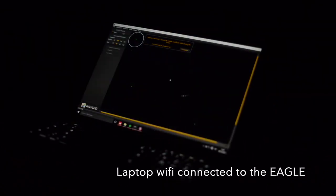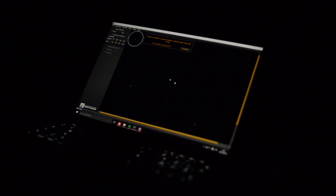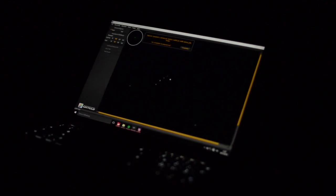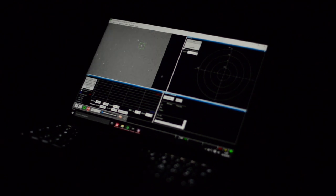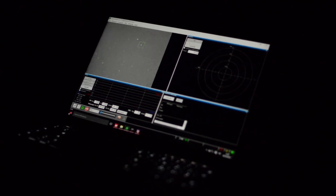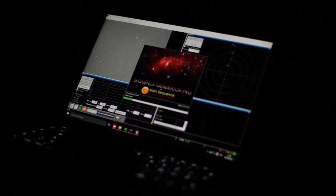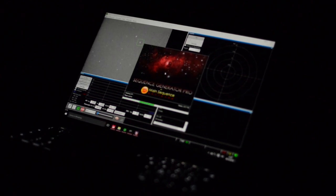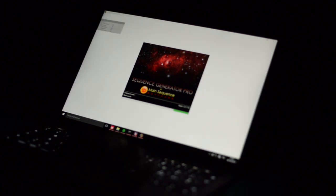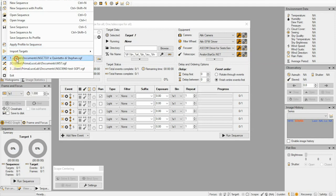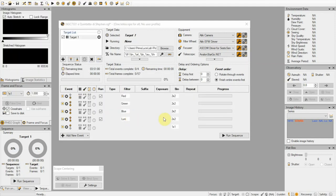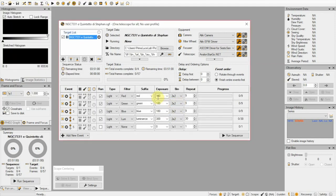So we have the polar alignment done, complete with the PoleMaster. Then we have the autoguiding software already running and now we start the Sequence Generator Pro, where we are going to activate the sequence that we already prepared. So we have a single software that automatically takes control of all the devices of our telescope and automatically performs all the sequence capture.